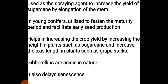In young conifers, gibberellins are utilized to hasten the maturity period and facilitate early seed production — the maturity period is sped up, resulting in faster seed production. They also help in increasing crop yield by increasing the height in plants such as sugarcane, and increasing the axis length in plants such as grapevine, as already discussed.